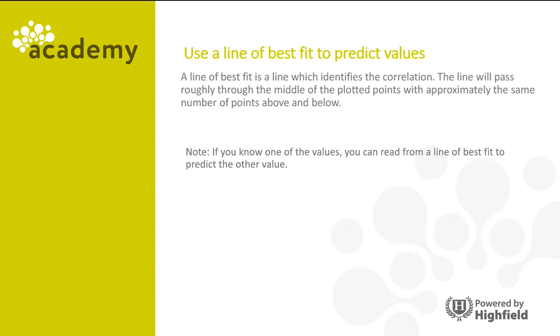Now it's worth noting if you know one of the values, you can then read from a line of best fit to predict the other value. So in this example, the scatter diagram on the left shows a line of best fit, and we can see from this that over two shopping trips, five items were bought.